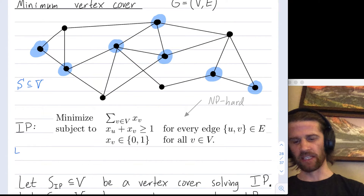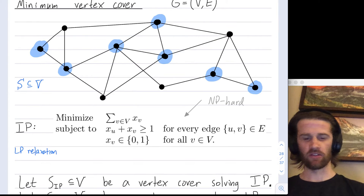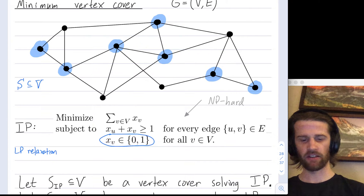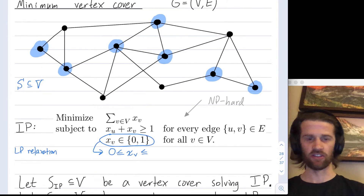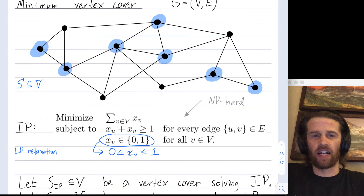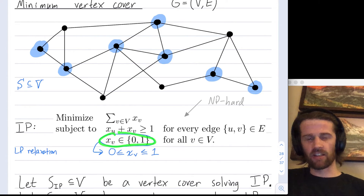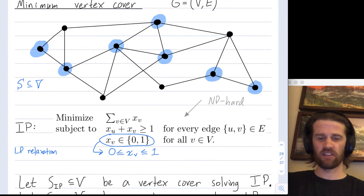Let me write here LP — linear program — and in particular the LP relaxation. All we're going to do is relax the integrality constraint. Instead of requiring each variable x sub v to be the integer zero or one, we allow it to be any real number between zero and one. The LP relaxation replaces the integer constraint with this looser constraint allowing real-valued variables.